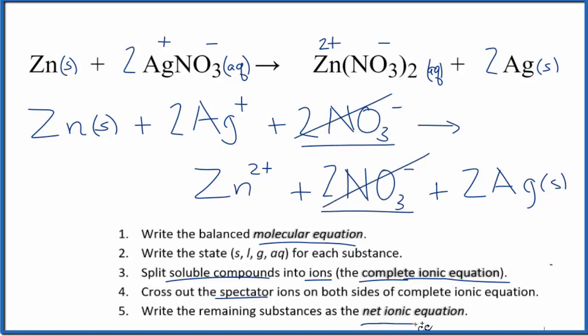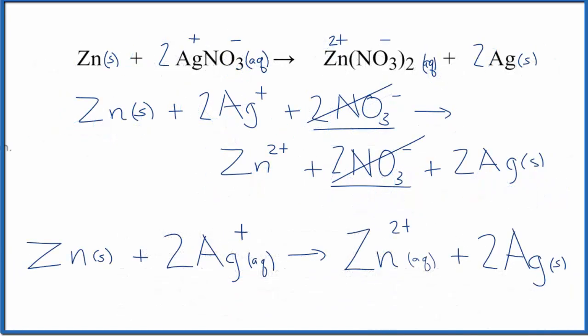And this is the net ionic equation. Let's clean that up and it'll look like this. And this is the net ionic equation for Zn plus AgNO3, zinc plus silver nitrate. This is Dr. B and thanks for watching.